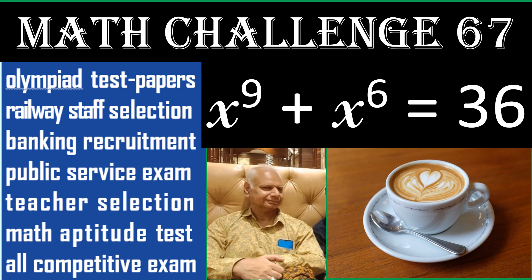Our question is simple: x power 9 plus x power 6 equal to 36. And x is positive real, but not necessarily rational.